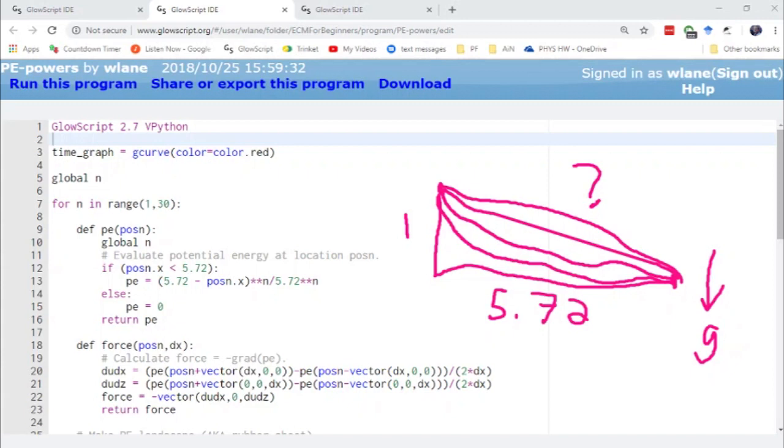And so the first thing that we're going to try on this is a power law. So we're going to have a power in here. That's going to be the power that we raise our position to. So the way we're going to scale it is we're going to take 5.72 minus position X component. The reason we're setting up this way so that we definitely have a zero at X equals 5.72.